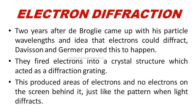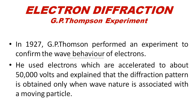This experiment will verify the wave nature. Here we are going to see G.P. Thomson's experiment. In 1927, G.P. Thomson performed an experiment to confirm the wave behavior of electrons. Electrons, accelerated to about 50,000 volts, are produced and directed. The beam passes through a thin foil and scatters to produce a diffraction pattern on a screen.